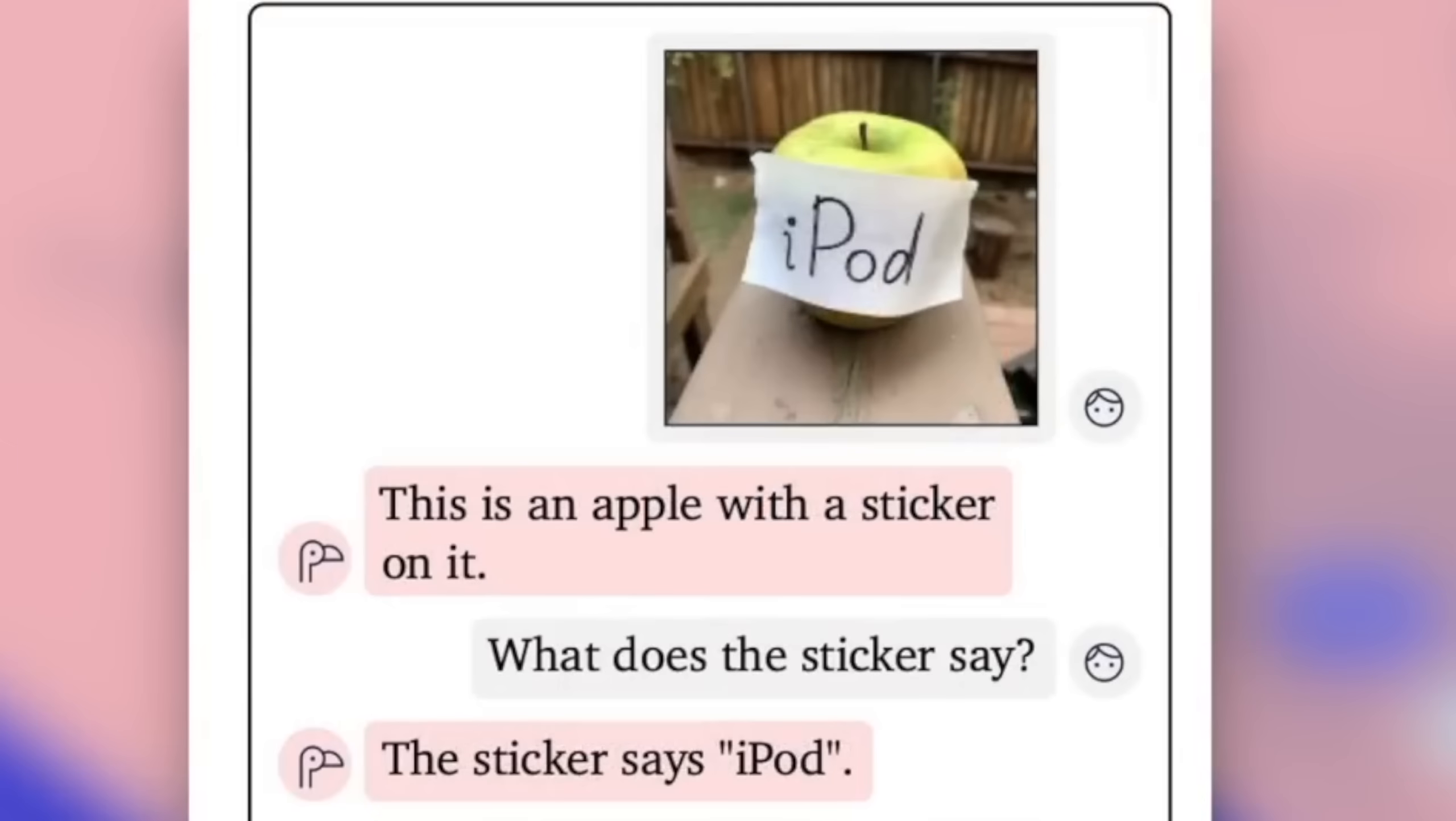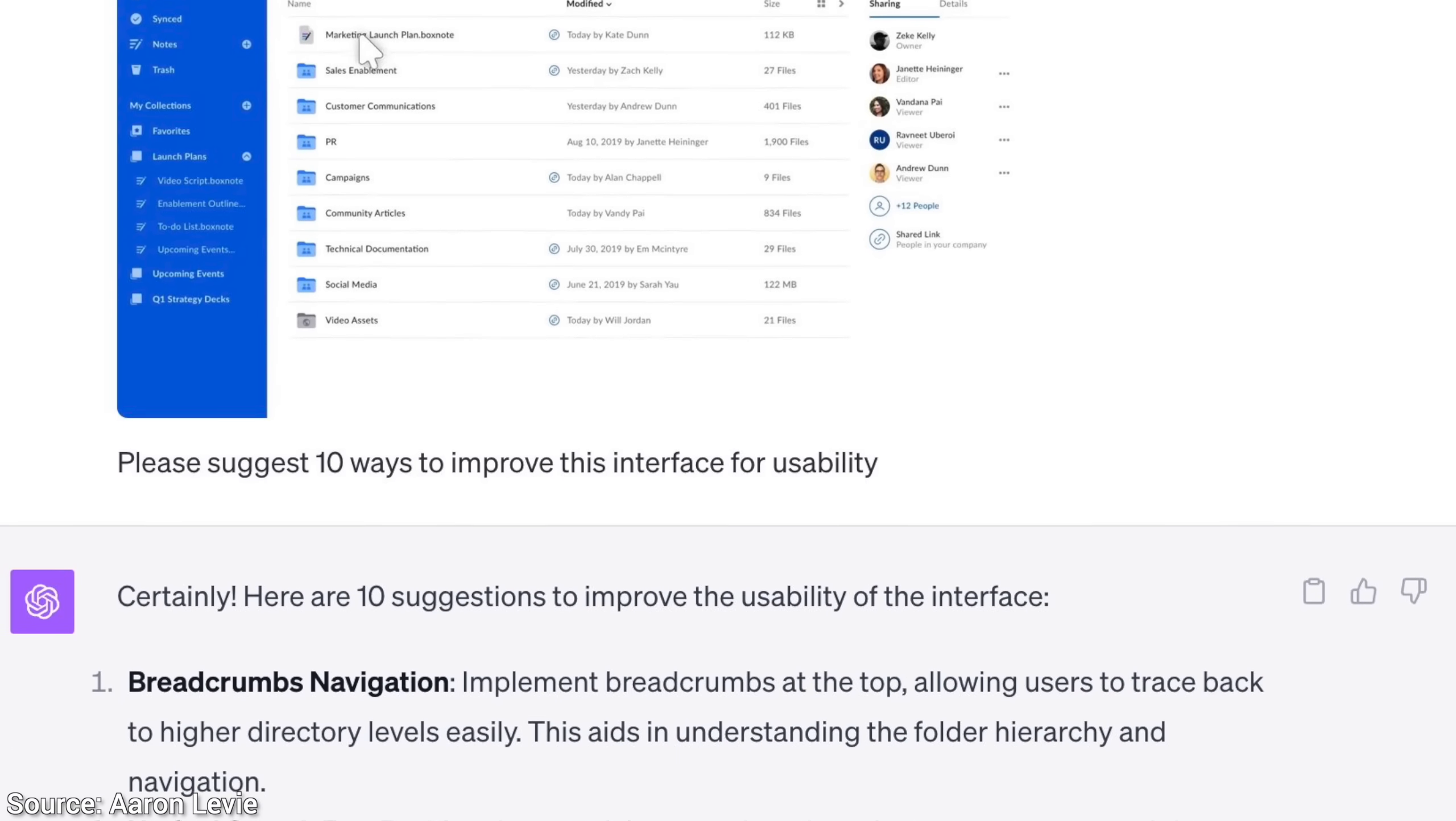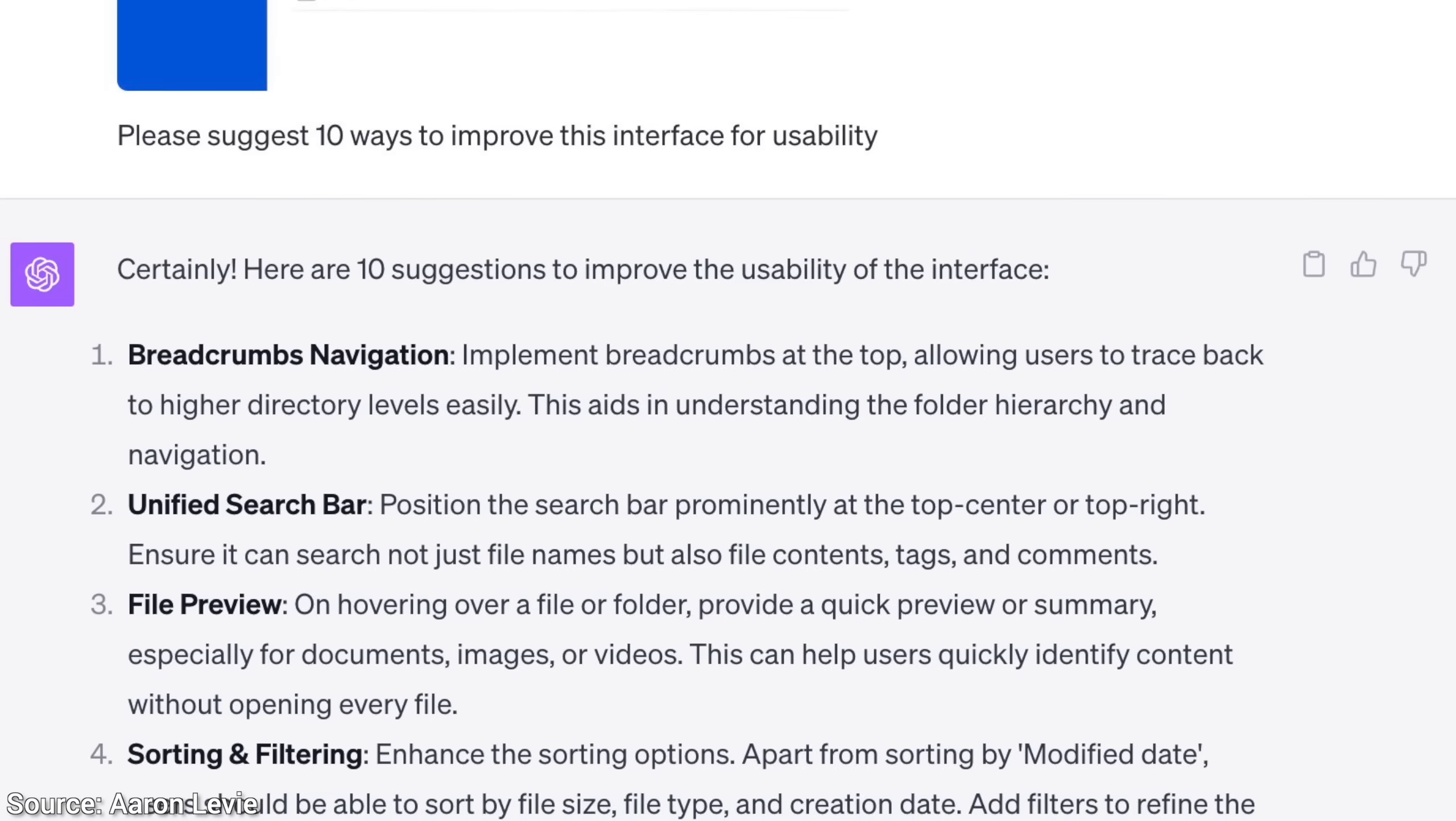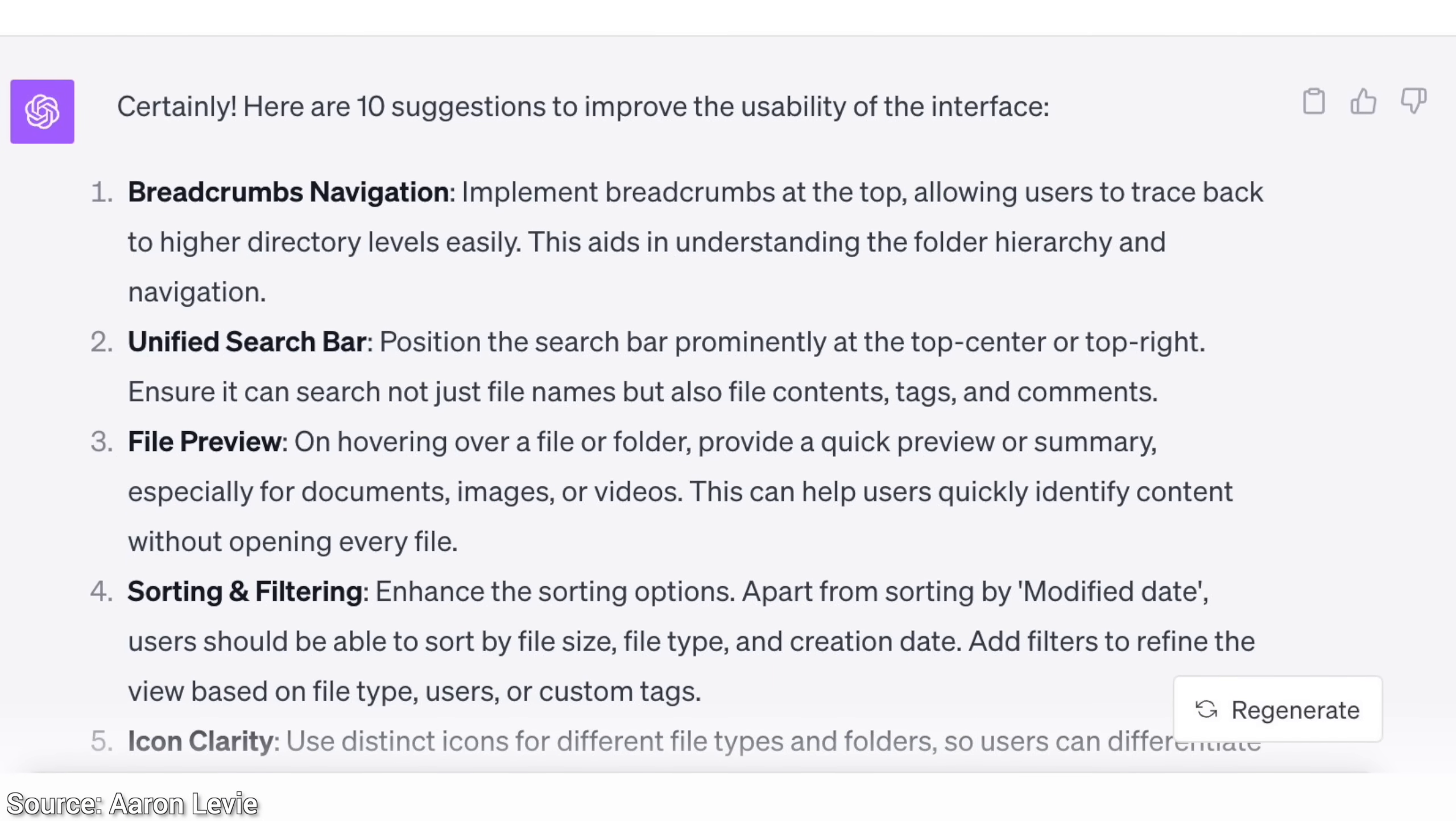Love it! It is kind of similar to the iPod trick earlier in fooling vision-based neural networks. Four, we can give it what an existing software product looks like, for instance, Box, and it gives us tips on how to improve it. Great comments on file previews, icon clarity, you name it! Note that these are not copy-pasted tips from design documents and textbooks.